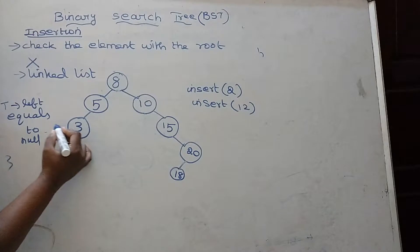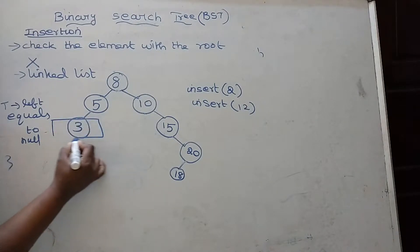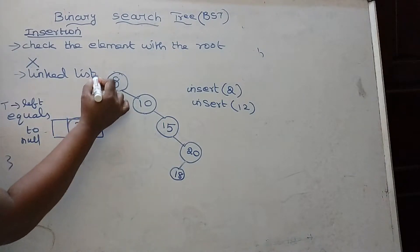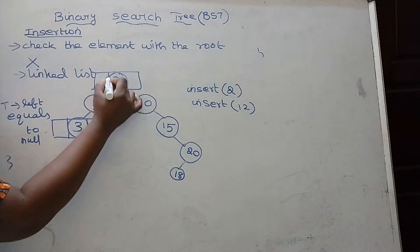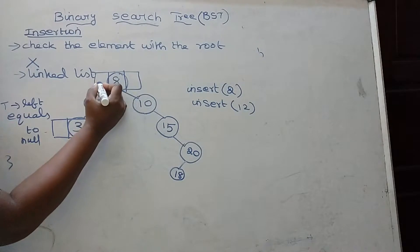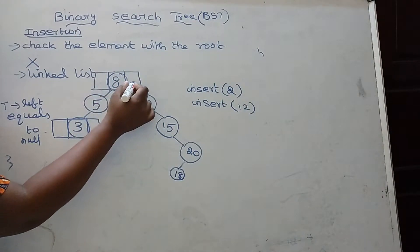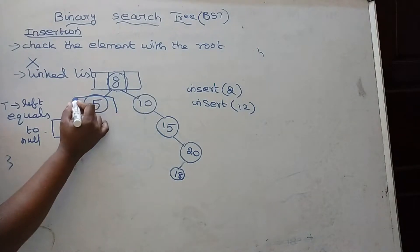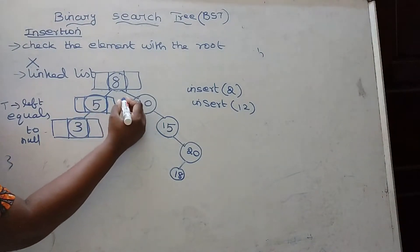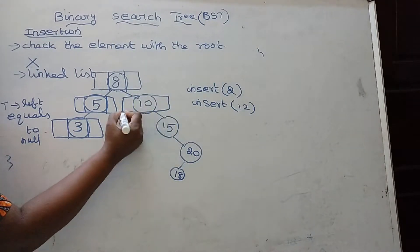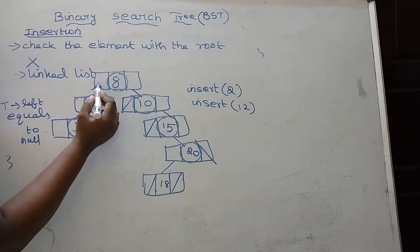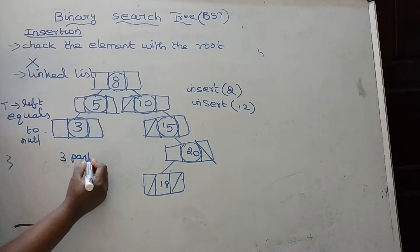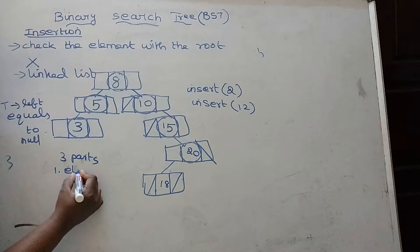For every node we are going to store three pieces of information: one is the element, another is the left child, and the other is the right child. The tree can be drawn as a linked list. Each node in the linked list will have three parts: the element part, the left child part, and the right child part.